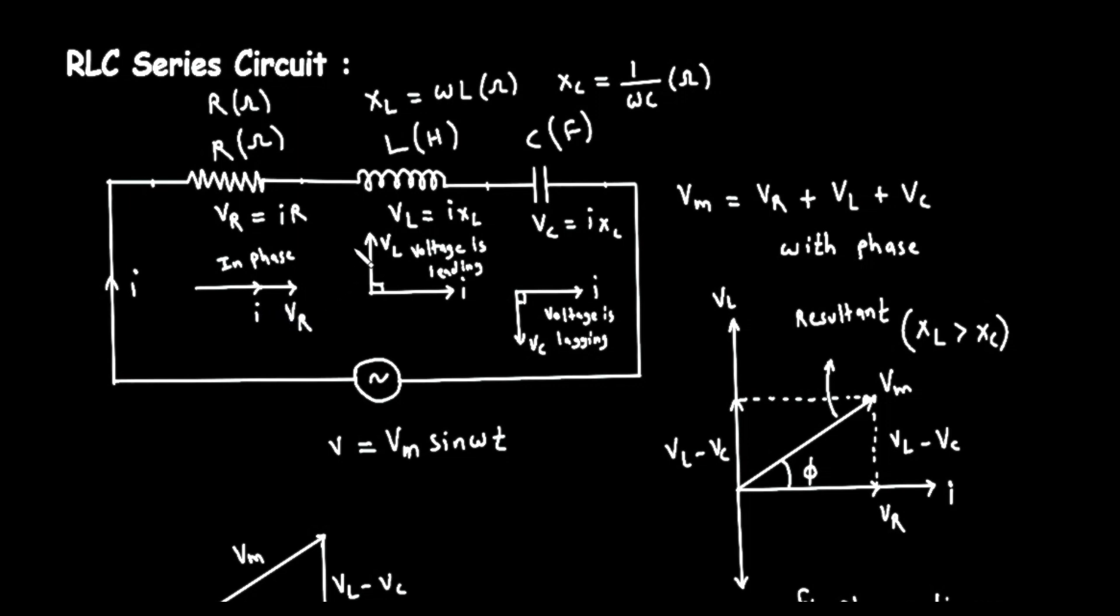Next in line, we have a component that looks like a coil of wire. This is the inductor, labeled with an L. Its property is called inductance, which is measured in a unit called Henry's, or H. In an AC circuit, an inductor creates an opposition to the change in current, and this opposition is called inductive reactance. It's labeled as X sub L. At the top of the image, you can see the formula for it, X sub L equals omega times L.